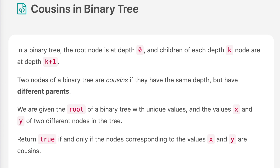The question says: in a binary tree, the root node is at depth zero, and children of each depth-k node are at depth k plus one. Two nodes of a binary tree are cousins if they have the same depth but have different parents.